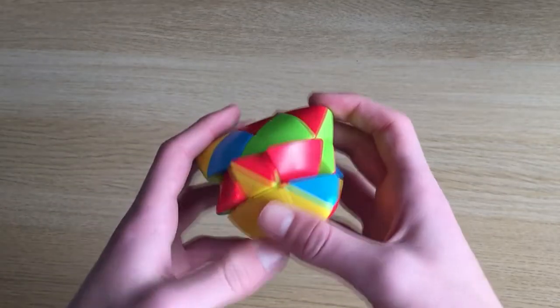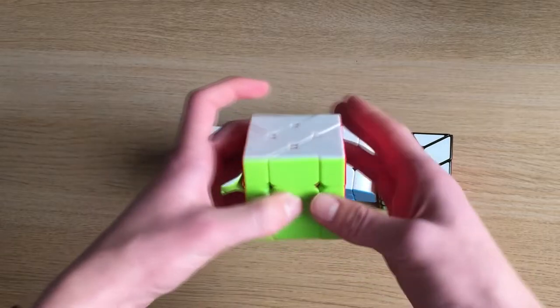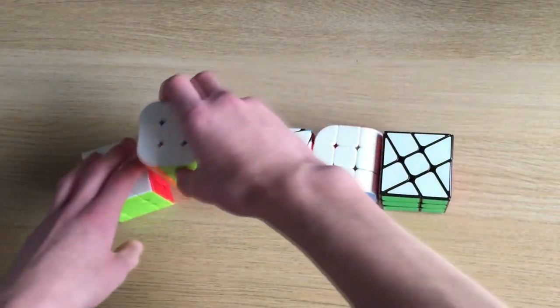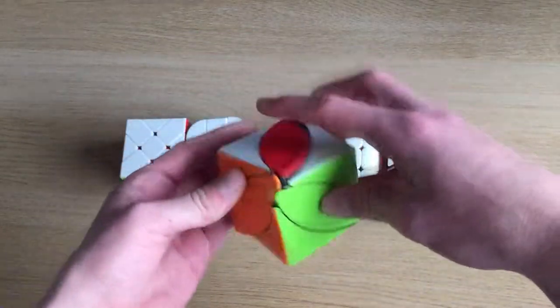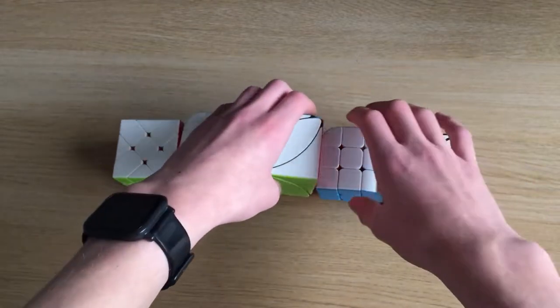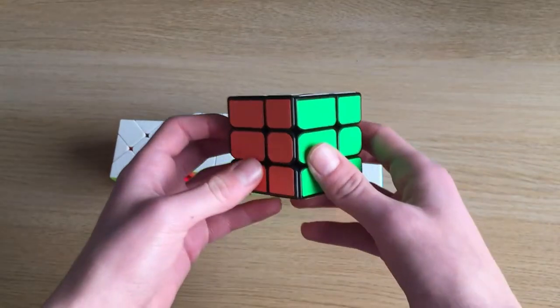I have a Master Morphix, which I have no idea how to solve. For my shape mods, I have a Fisher cube. A windmill cube. An Ivy cube, which is quite cool. I have a Penrose cube. And I have a Windmill cube.